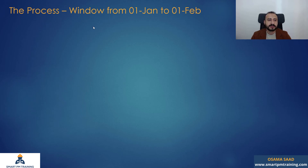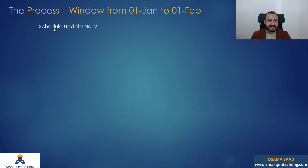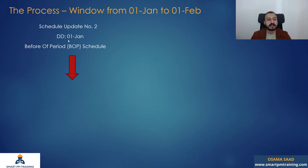Here is one example. I'm going to show you the process of one window. The start will be 1st of January and the end of the window is 1st of February. So that's my schedule at the beginning of the window — it is schedule update number two, with data date 1st of January, and it is called the before-of-period schedule.